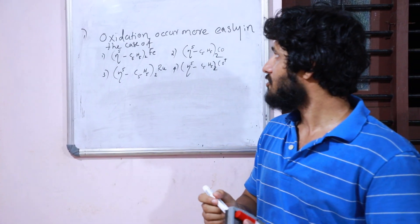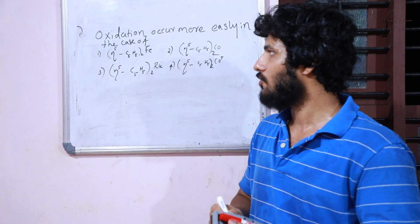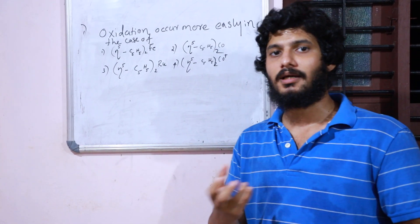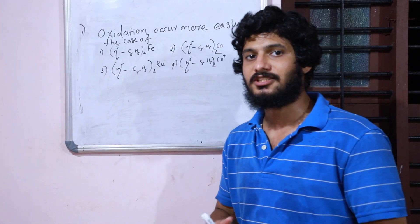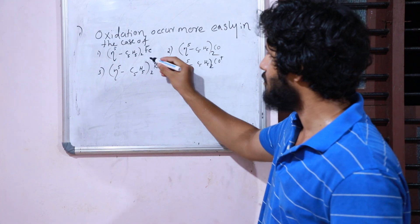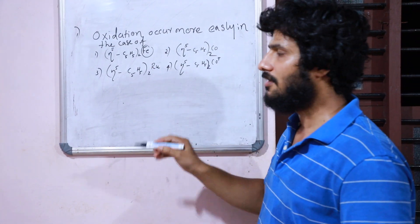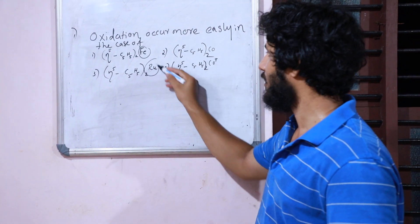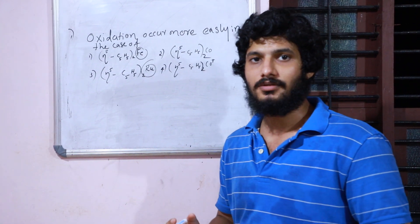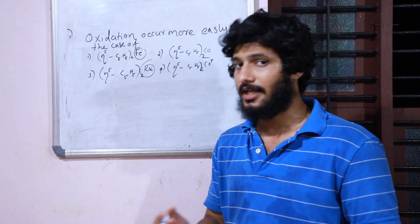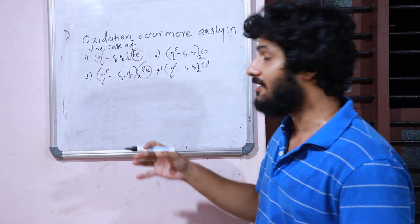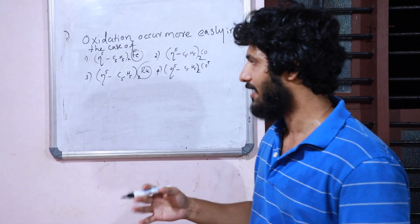The question is: oxidation occurs more easily in which of the four given options? First, you should think about the stability of the compound, the stability of the species, the stability of the metal ion, the structure and geometry, and other aspects. We have to check the stability and the electron count of such compounds.